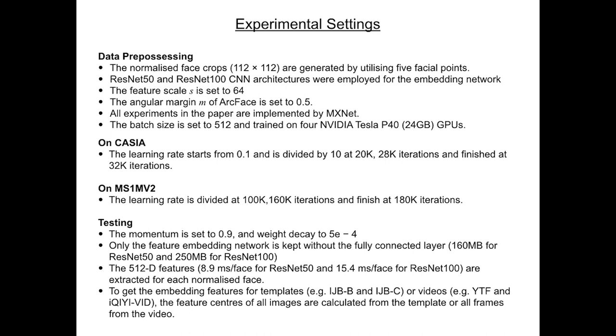For testing, the momentum is set to 0.9 and weight decay is 0.0005. Only the feature embedding network is kept without the fully connected layer and the 512D features are extracted for each normalized face. To get the embedding features for templates, the feature centers of all images are calculated from the template, or all of the frames from the video sets.